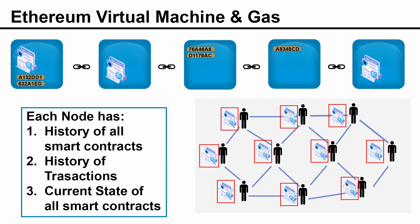So if something goes wrong inside the EVM, it will not affect other parts of your computer or hard drive — it does not spread outside the EVM. This solves our first problem: viruses will never spread to your computer, and smart contracts don't have any access to your private information on your hard drive.